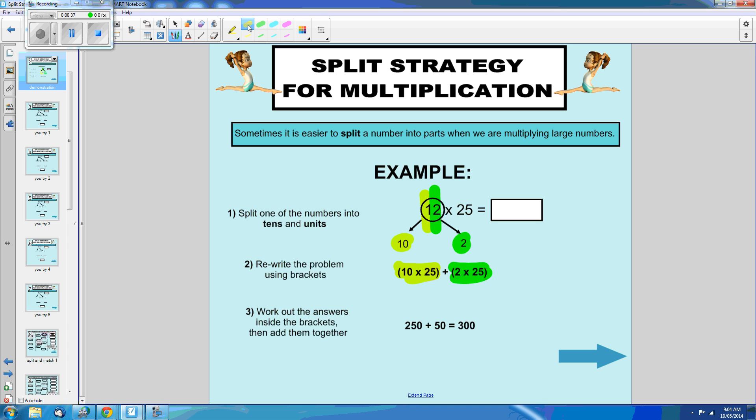10 times 25 equals 250. 2 times 25 equals 50. Which makes it much easier to get our answer, which is 250 plus 50 equals 300.